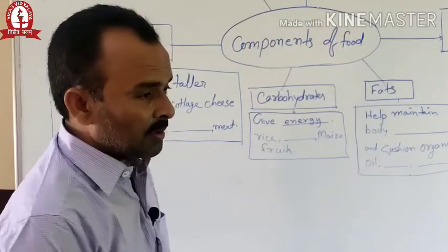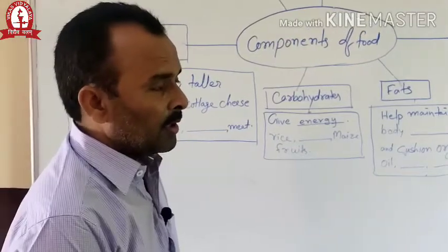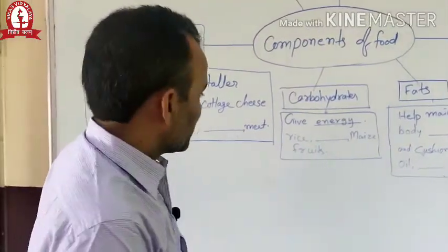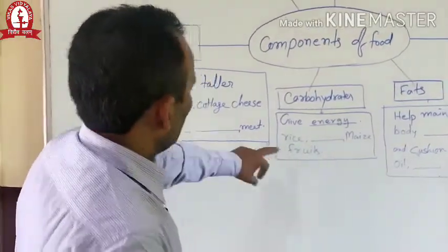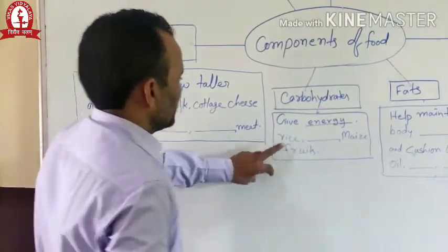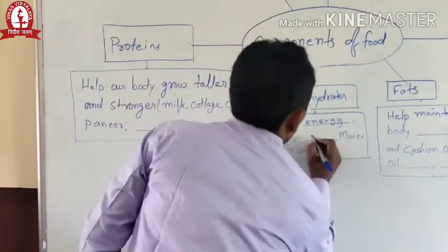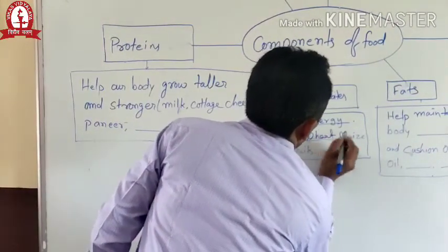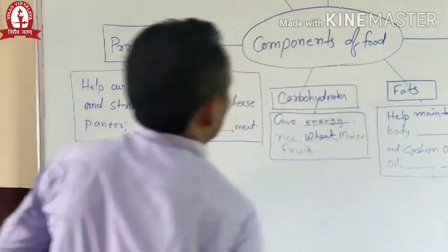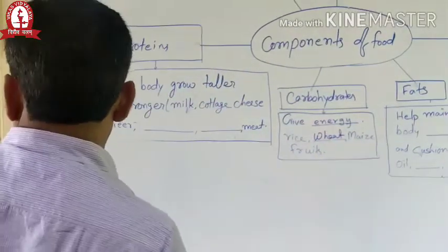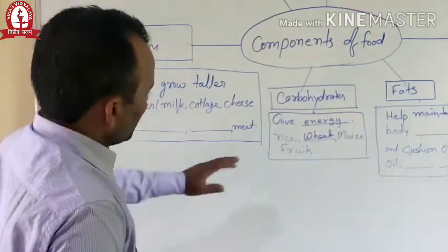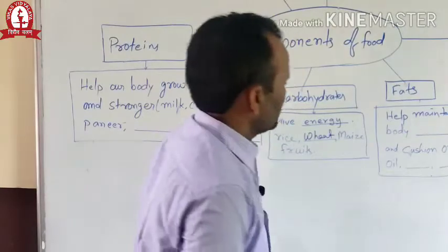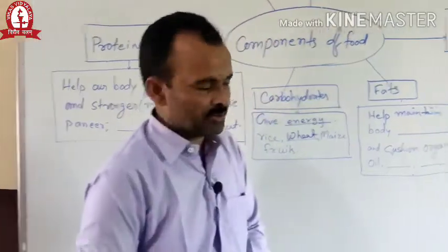What are the food items that give us energy? Rice, wheat, maize, and fruits. Rice, wheat, maize, and fruits are the food items that give us carbohydrate.